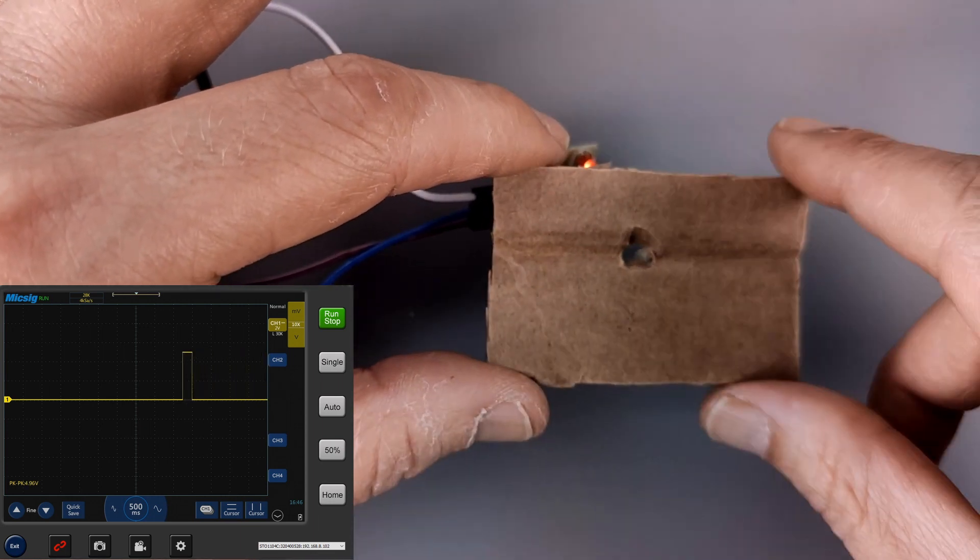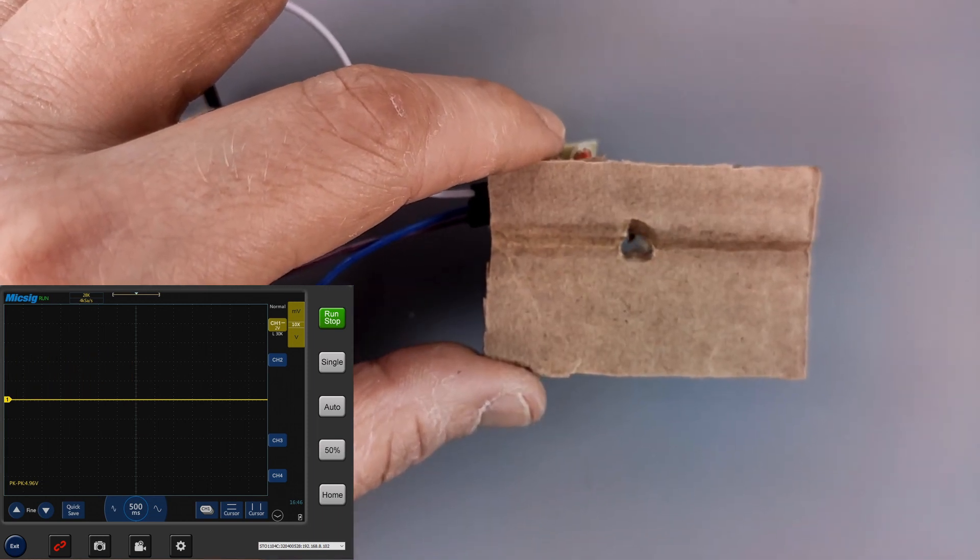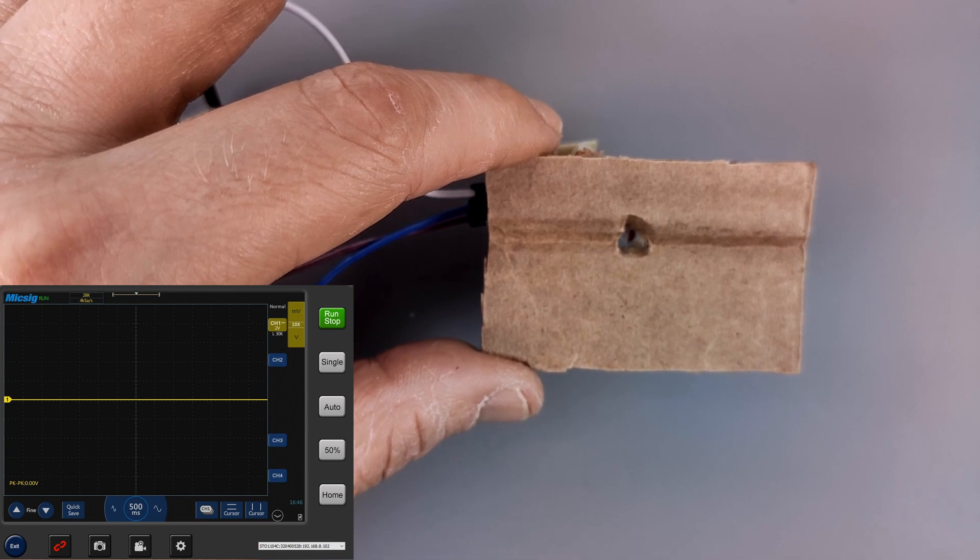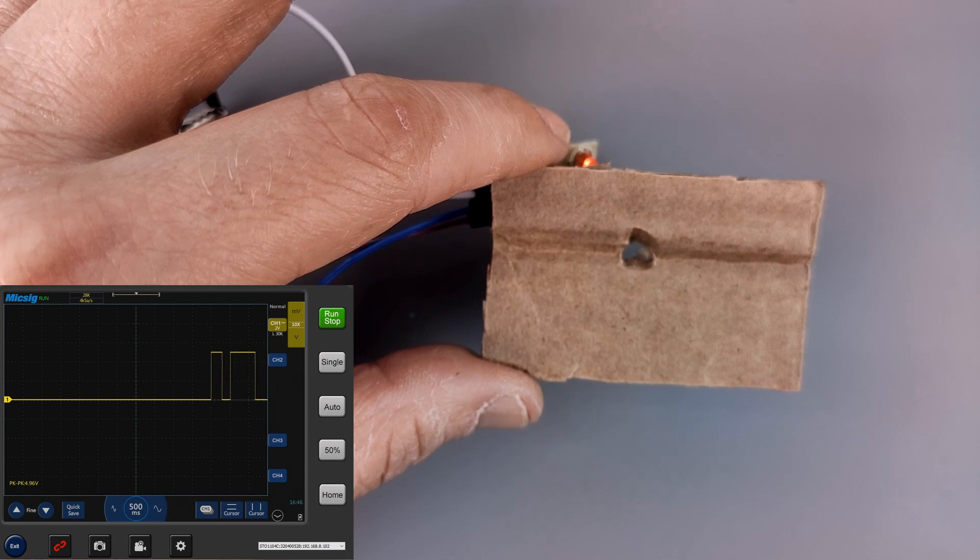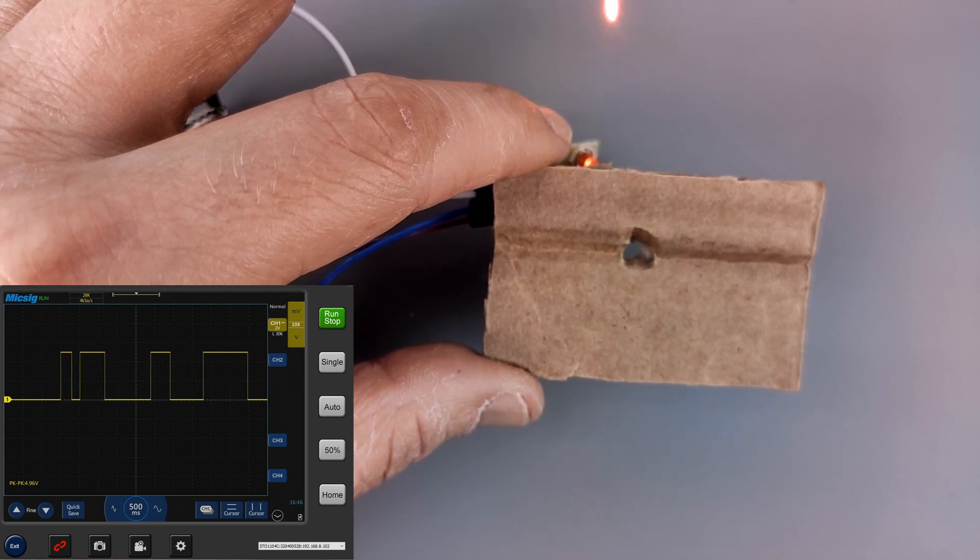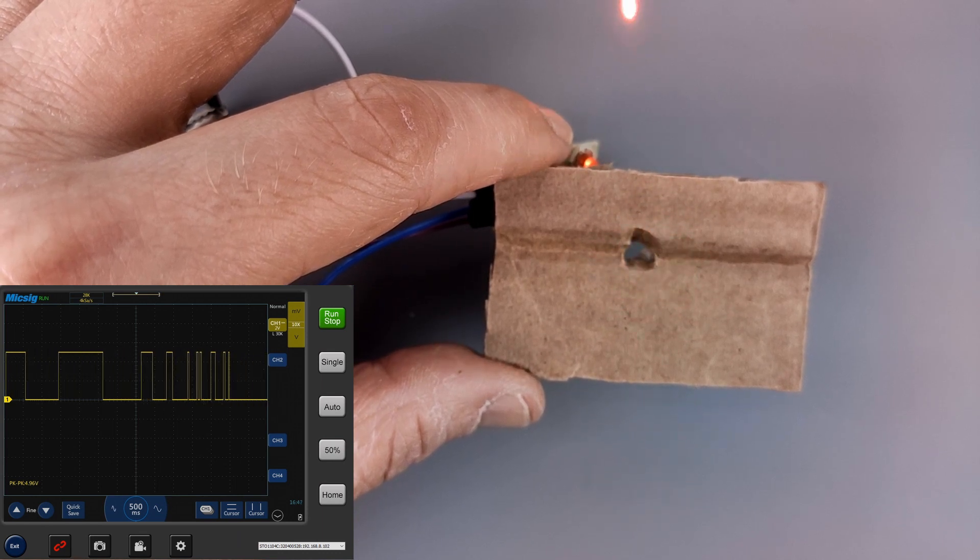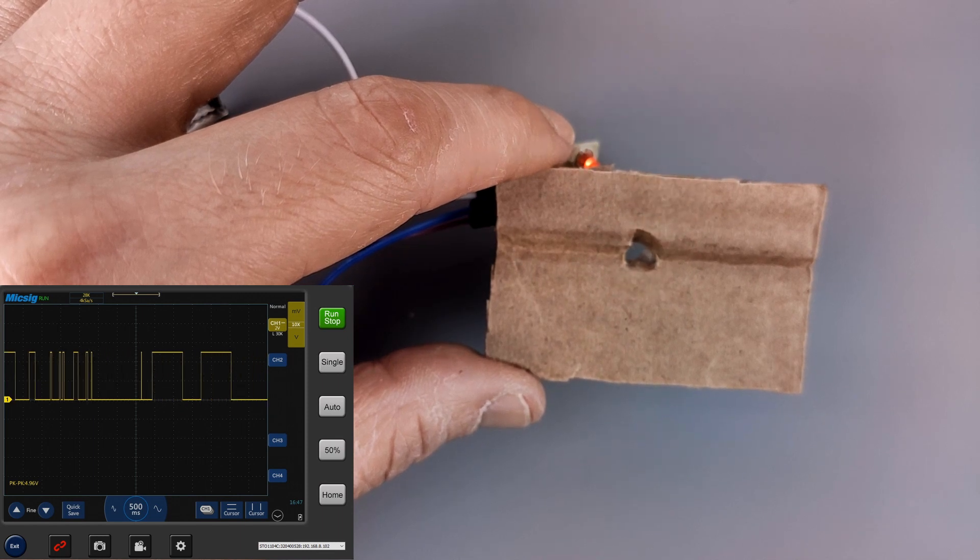So if I hold it like this and then shine the laser through the hole in the cardboard, it actually detects that. And I can make a nice square wave pattern, maybe even send a message.